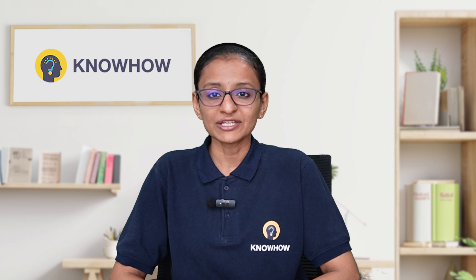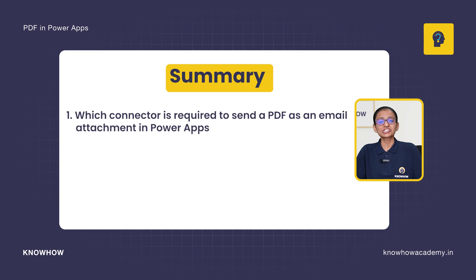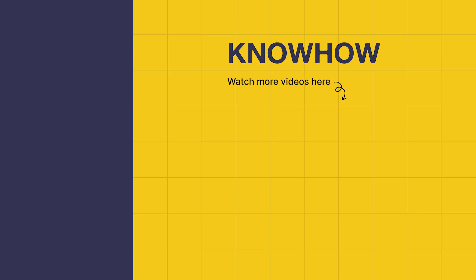To summarize what you learned from this video: first, which connector is required to send a PDF from Power Apps to your mail — that is the Office 365 Outlook connector — and second, how you can send a PDF from Power Apps. Thank you for choosing KnowHow Academy as a source of your IT knowledge. We are always here to help you navigate the tech world. If you have any questions, do not hesitate to reach out to us. Stay curious, keep learning.